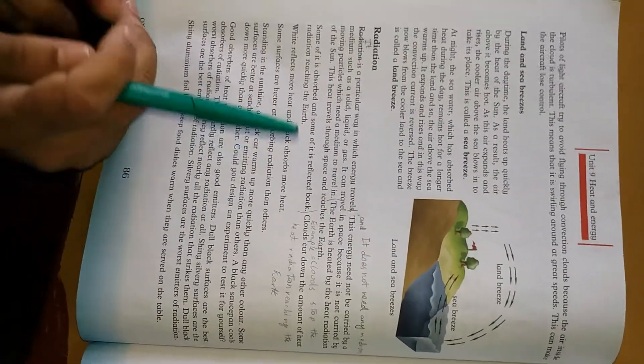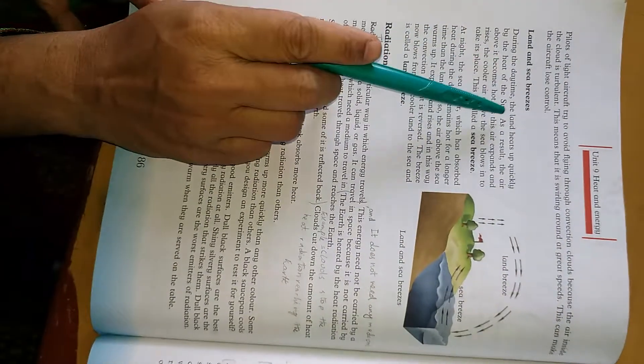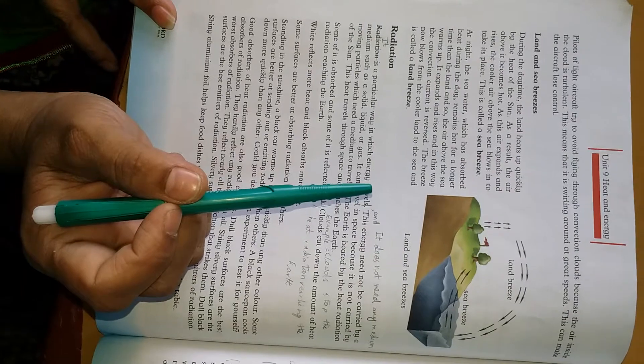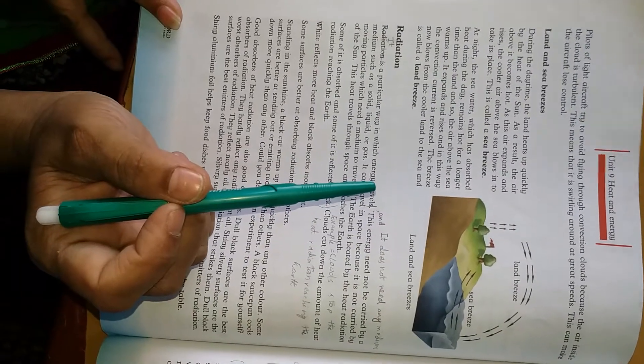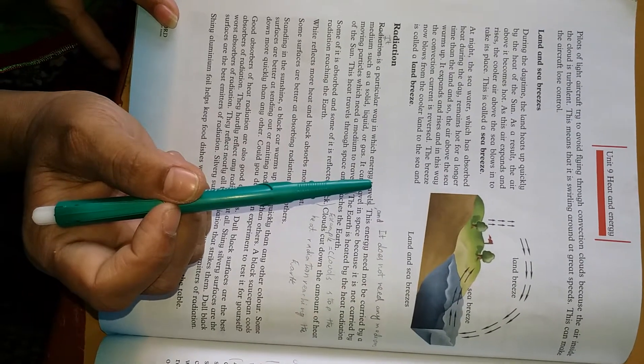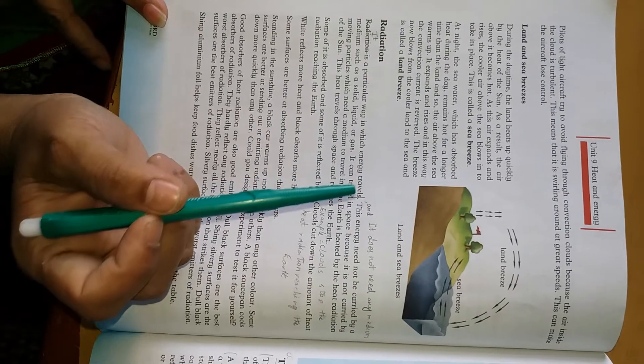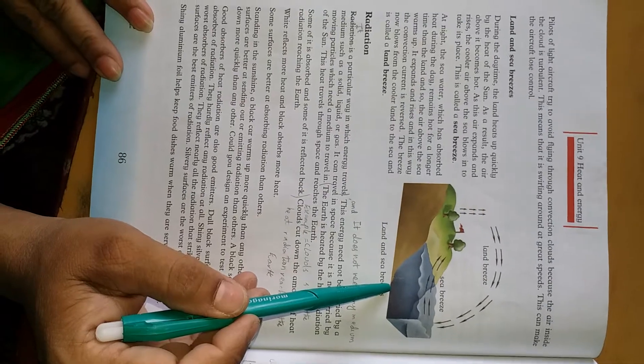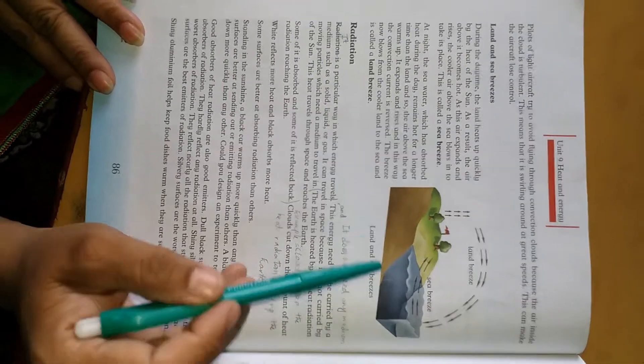Now here we have a new topic: land breeze and sea breeze. We will see how land breeze moves towards the sea and sea breeze moves towards the land. You can see here this diagram which shows the land breeze and sea breeze.